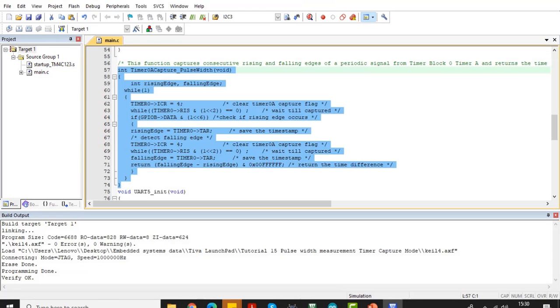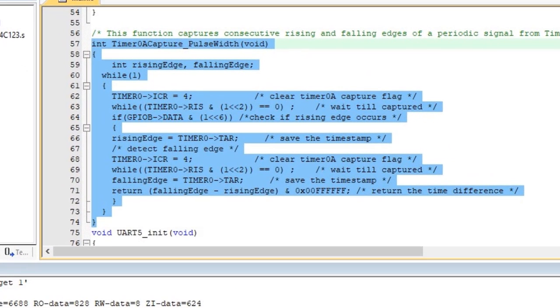It also sends the measured pulse duration to computer through UART5 module of TM4C123GH6PM microcontroller. This function captures consecutive rising and falling edges of a periodic signal using timer block zero and returns the time difference. Now upload this code to Tiva-C launchpad.